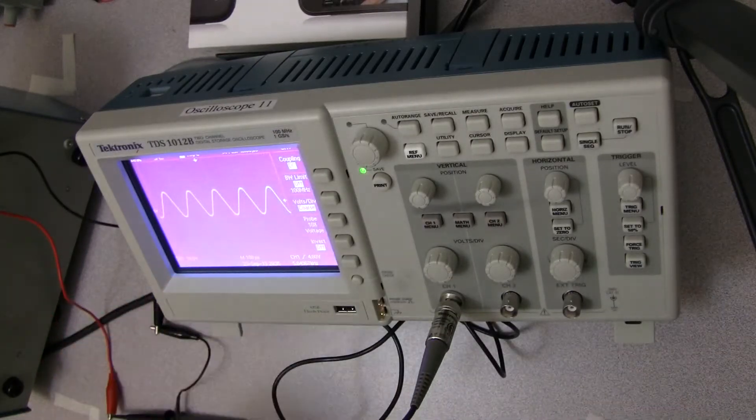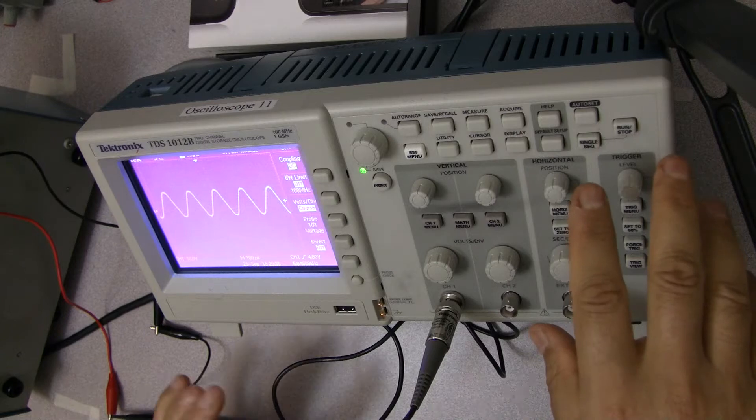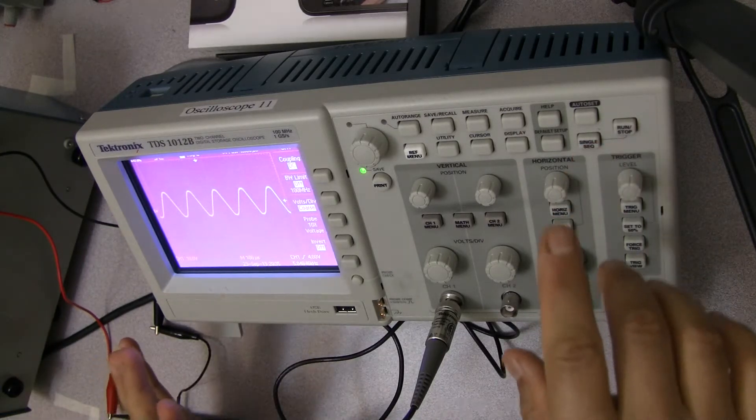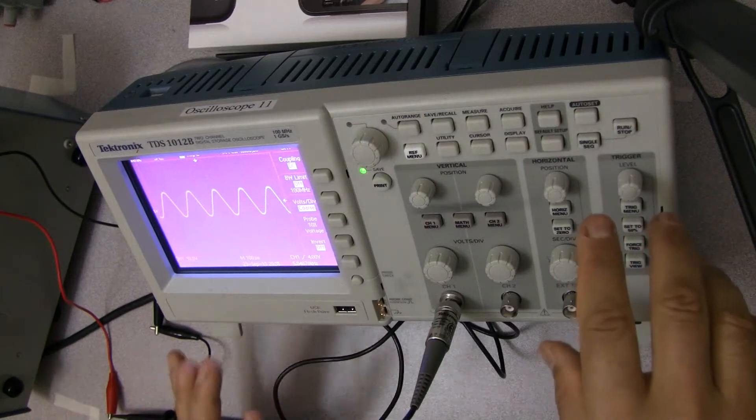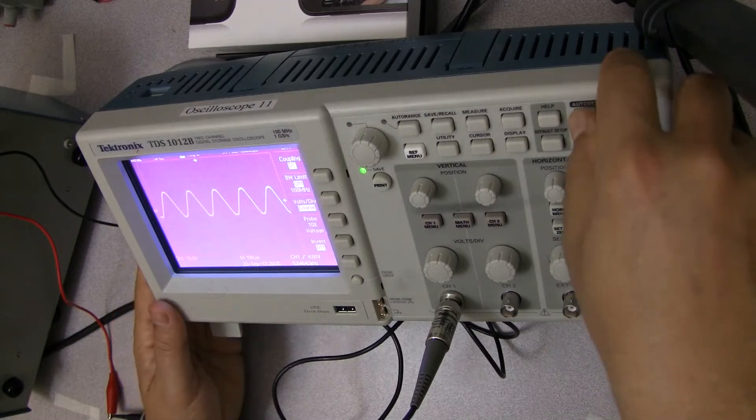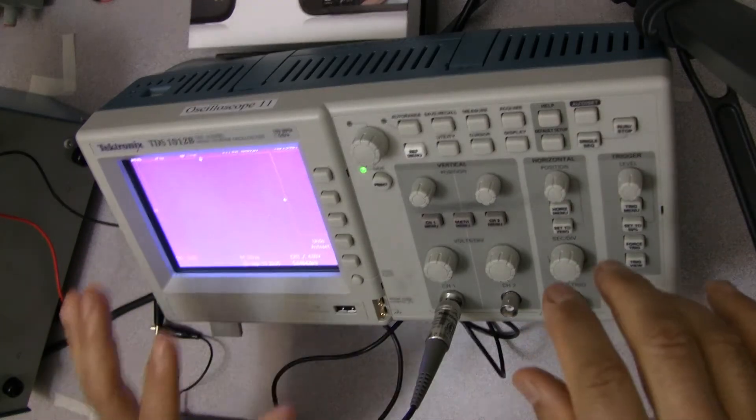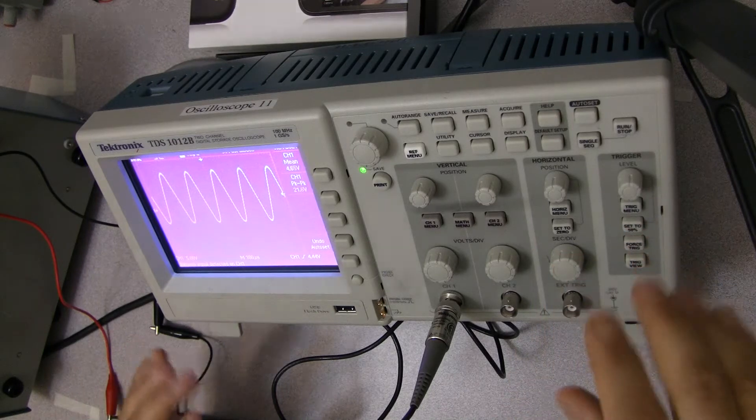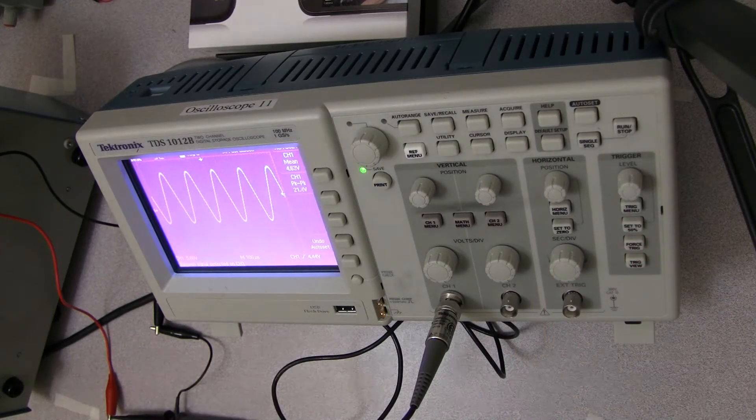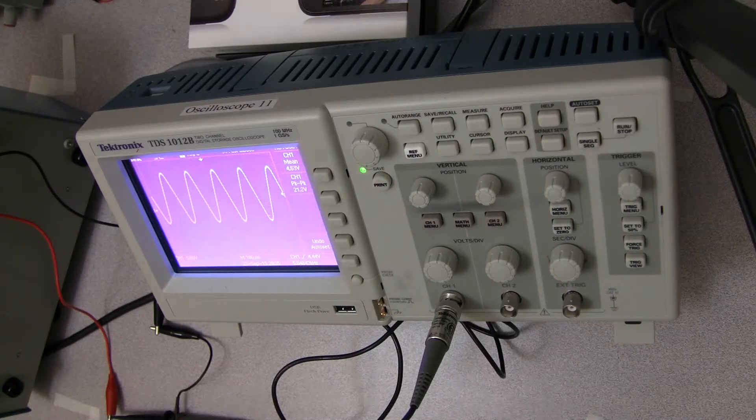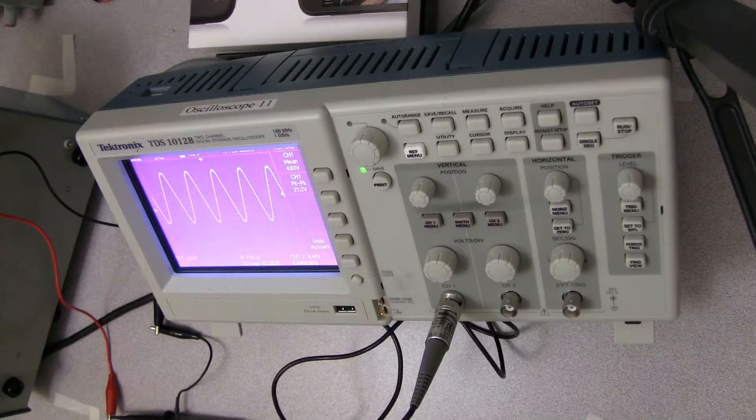The scopes are great because if things got really messed up and you don't know what's going on, there is a place called auto set. You press it and the scope will automatically try to figure out how best to set it. So now we've got the scope doing that. I'm going to shut the light off here so you can get a better look at the screen.